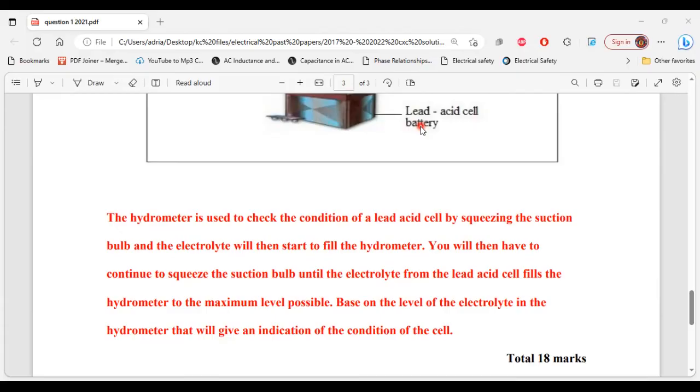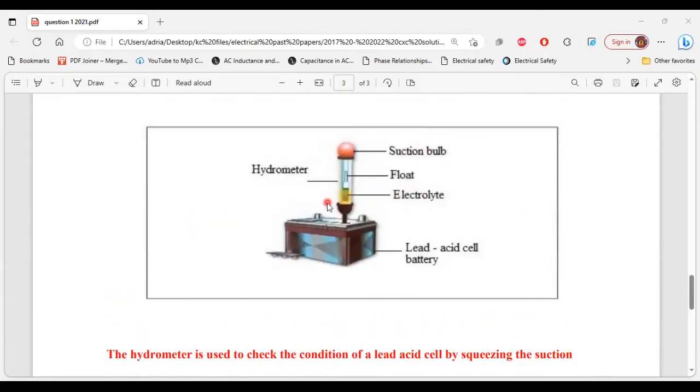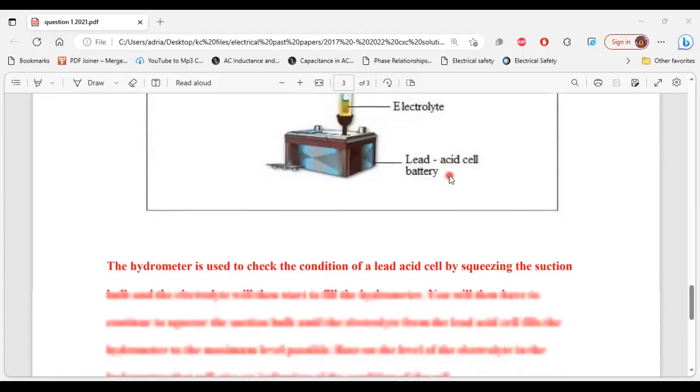On the hydrometer itself you would see labeling, for example, like good, very good, or bad condition. You see labeling like those on the hydrometer. So those are some examples. That's it for this question.